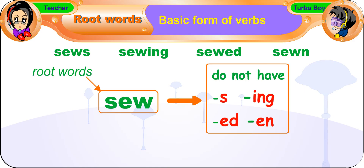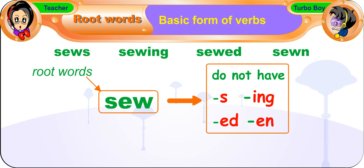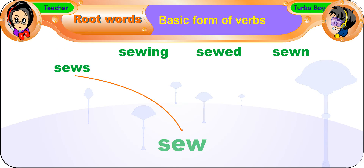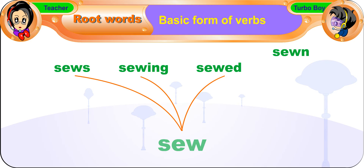Root words of verbs do not have 's', 'ing', 'ed', or the past participle 'en' added to them. So the root word of these verbs — sows, sewing, sewed, and sewn — is 'sew.'